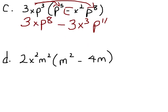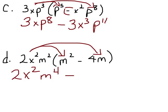And then finally, d, we have this that's going to be distributed over both of these terms. And we are going to have 2x squared and m squared times m squared is m to the fourth minus 2 times 4 is 8x squared m to the third.